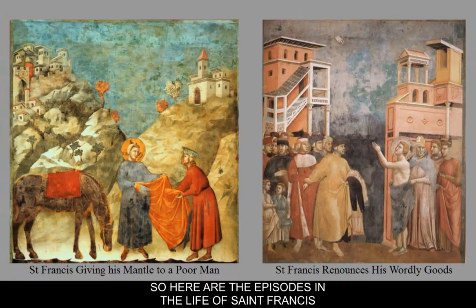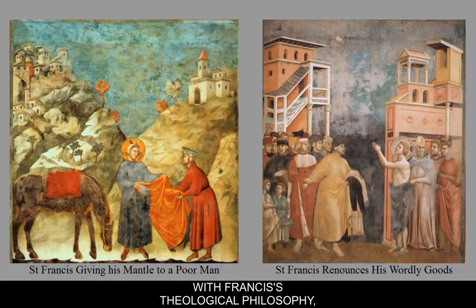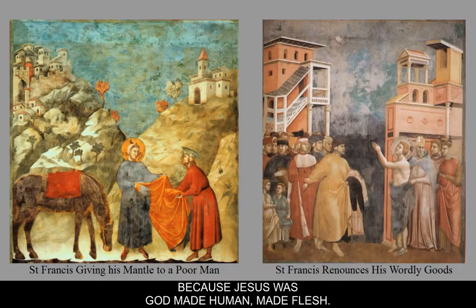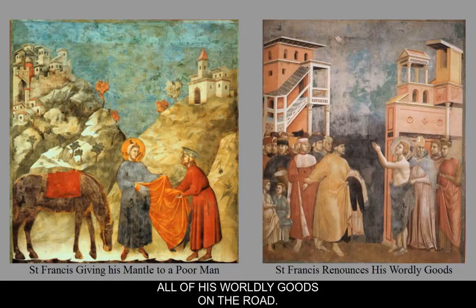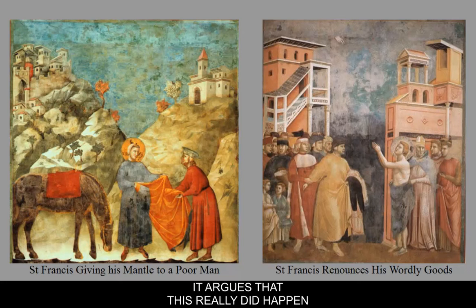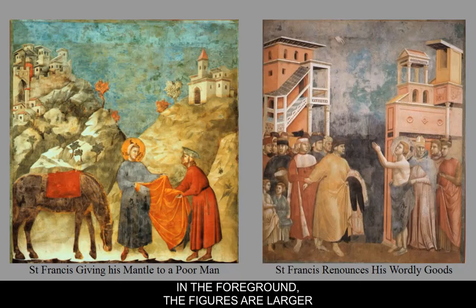Here are the episodes in the life of St. Francis. What Giotto does is humanize him — Francis is a real person — which fits Francis's theological philosophy that one should be human, emulating the life of Jesus because Jesus was God made human, made flesh. On the left-hand side, St. Francis is giving away all of his worldly goods on the road. Some formal aspects: we have a foreground, middle ground, and background, size-scale relationships where foreground figures are larger than the landscape and buildings, and almost a sense of sky and horizon line in those mountains.